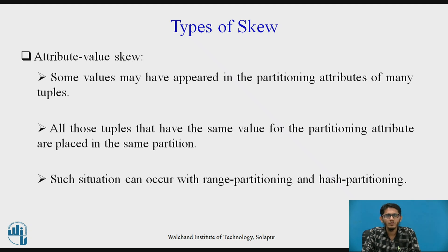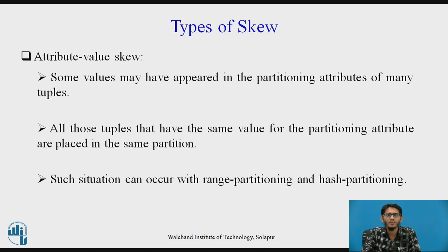Attribute value skew: some values may appear in the partitioning attributes of many tuples. This means the same value appears in multiple tuples, especially in the column designated as the partitioning attribute. All those tuples with the same value for the partitioning attribute are placed in the same partition, meaning they are all mapped to the same disk. This situation can occur with both range partitioning and hash partitioning, as values may map to the same site.